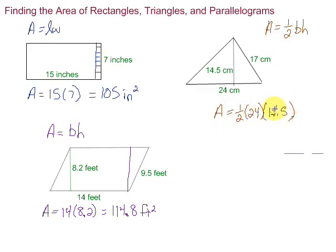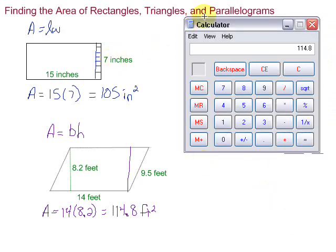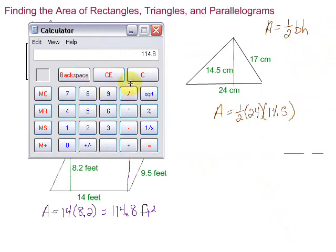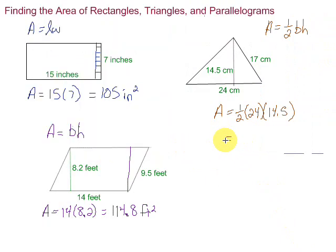So, we have 14.5. We go ahead and multiply all that stuff. Remember, one half is also known as .5. So, we can put that into our calculator that way. So, .5 times 24 times 14.5 equals 174.